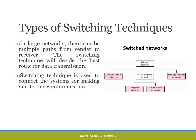There are different methods in which these switches can be enabled. In a large network, there can be multiple paths for sending data from sender to receiver. The switching technique will decide the best route for data transmission and is used to connect systems for making one-to-one communication. As you can see in the figure, switched networks are basically divided into three types.